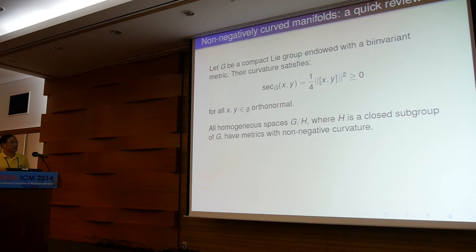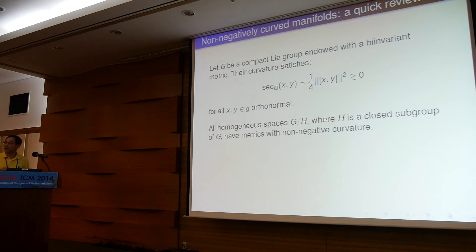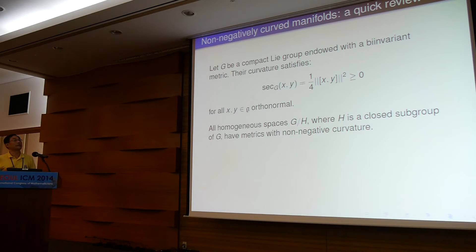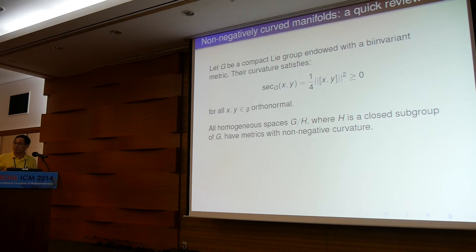Similarly, if you consider a homogeneous space of compact type, where H is a closed subgroup of compact Lie group G, if you take the bi-invariant metric, then from the O'Neill formula you can calculate that the sectional curvature is non-negative. However, you should notice that if the rank of the Lie group is at least two, then there are some directions where the curvature vanishes — meaning there are some zero curvature directions, because if x and y commute, then this gives you zero. So there are much fewer examples of manifolds with positive sectional curvature.